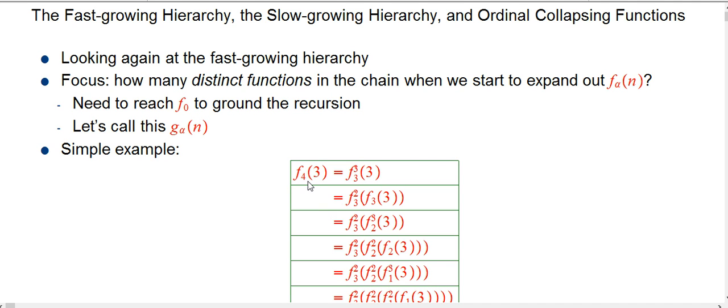We're going to call that g sub α of n. It's a new function, depending on which ordinal you're using and what the n is as the input. So let's just go into some examples to explain what I mean by the chain, distinct functions, things like that. Really simple. f sub four. This is on the level of triple up arrows, Knuth triple up arrows.